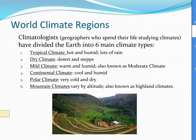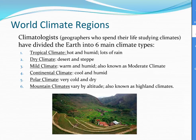Climatologists today have divided the Earth into six climate types. These are the main climate types, which can be broken down into subcategories. The six main types are: tropical climates, which are hot and humid with lots of rain; dry climates, which include desert and steppe regions; mild or moderate climates, which are warm and humid; continental climates, which tend to be cool and humid; polar climates, which are cold and dry; and mountain or highland climates, which can vary by altitude.